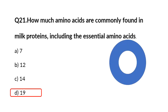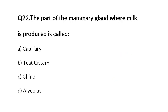Question number 22. The part of the mammary gland where milk is produced is called A capillary, B alveoli, C cistern, D alveolus.